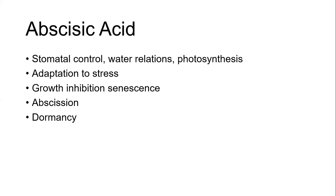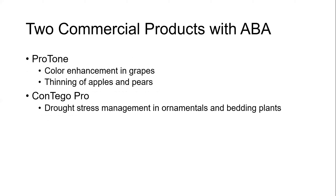Abscisic acid buildup helps in part to inhibit growth as we go into the dormant winter season. There are two commercial products that contain abscisic acid. The one we're most interested in is Proton, introduced several years ago to enhance red color in grapes and this year being introduced as a thinner for both apples and pears. There's also Contigo Pro, introduced to counteract stress in ornamentals and bedding plants.